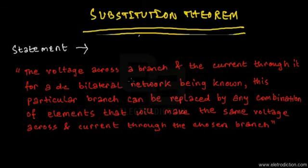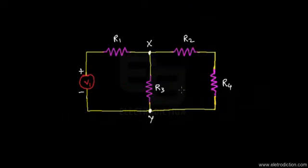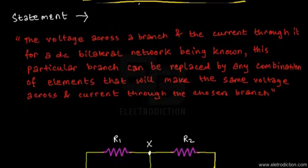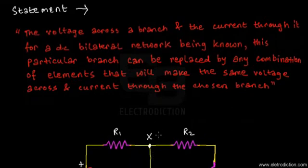To make this more understandable, here we have a particular electrical network which is a DC network driven by a DC source, and it's also bilateral. Now let's say for this network we go forward and apply the Substitution Theorem across the particular branch across nodes X and Y, specifically the branch containing R3.